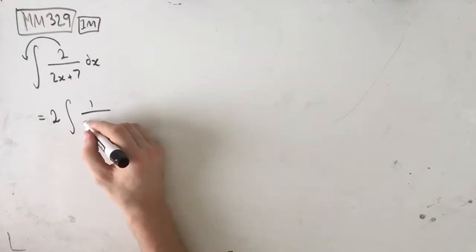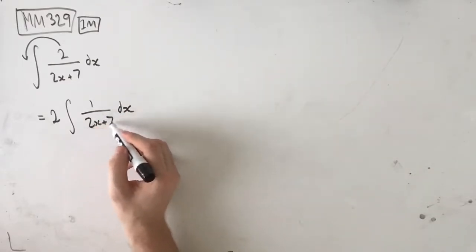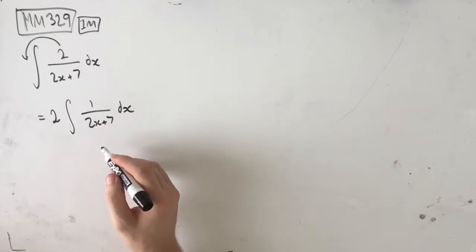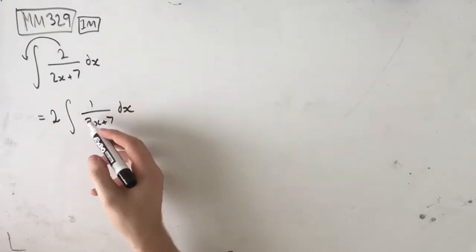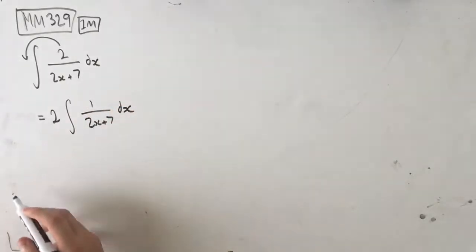We're going to get 2 times 1 over 2x plus 7. Because whenever we've got this 2x plus 7 type thing here, we're going to need to change this into a log when we integrate it. But we don't want a number on the top, right? We want that to be a 1. So we're going to take that out the front.